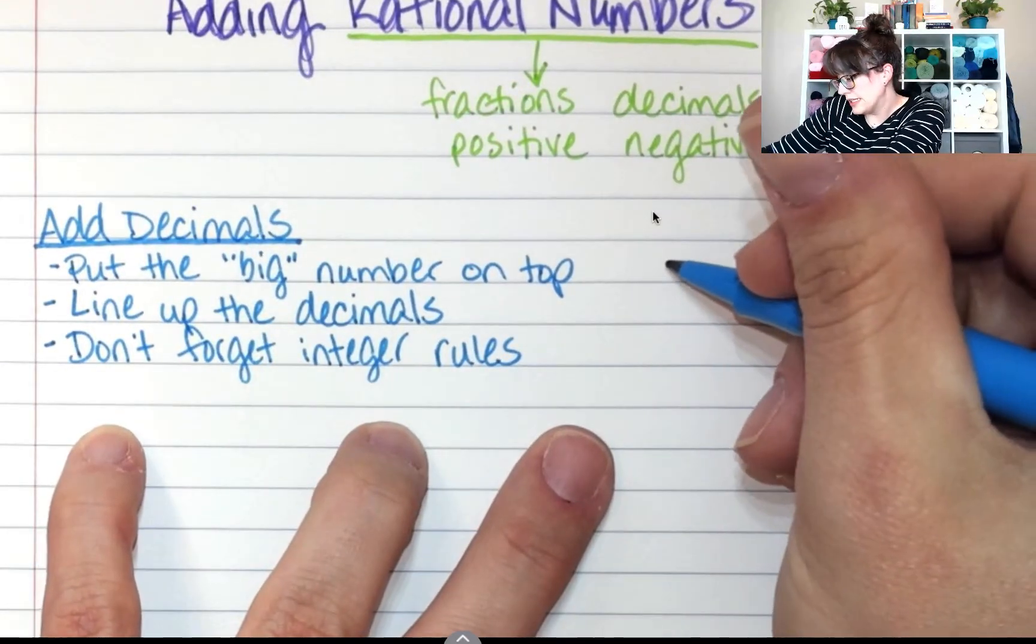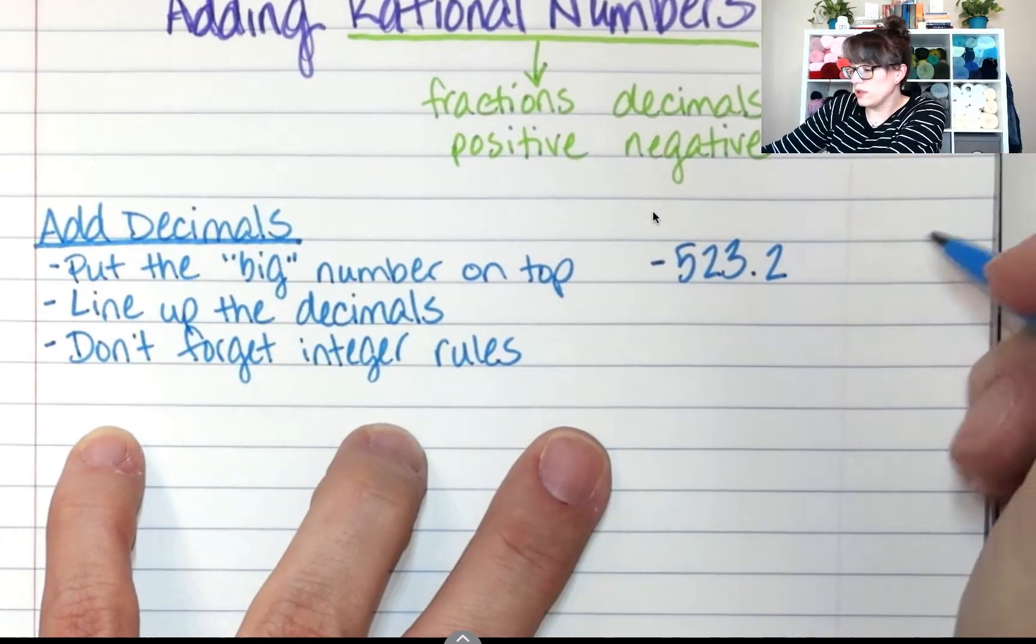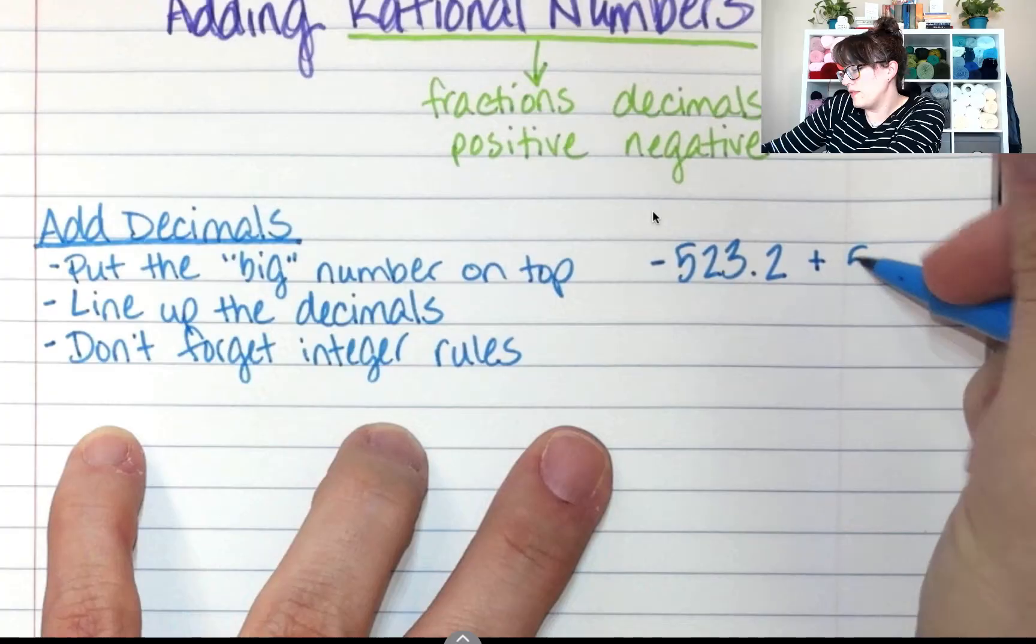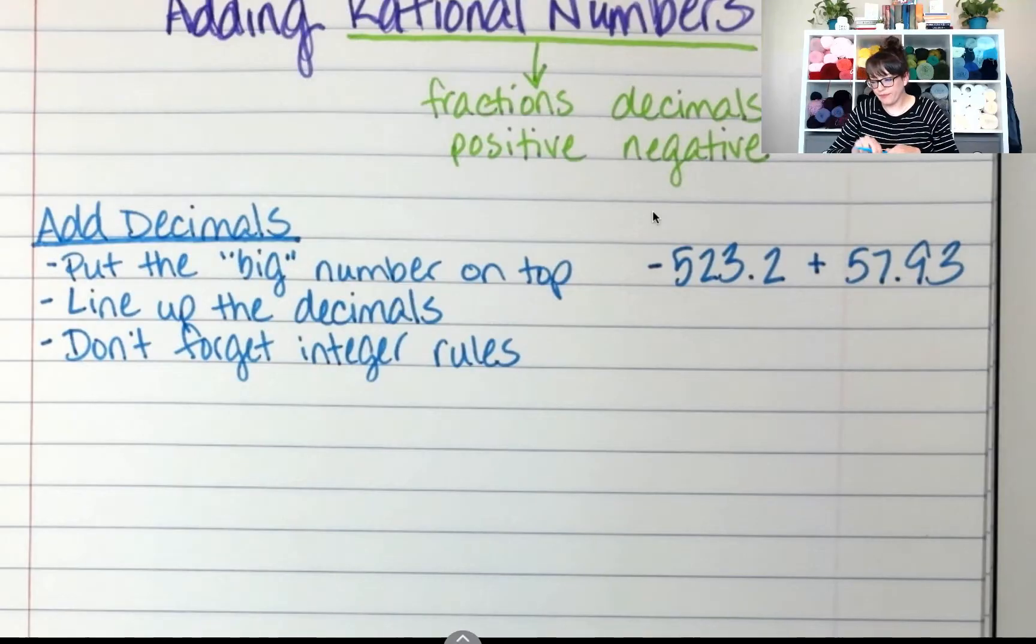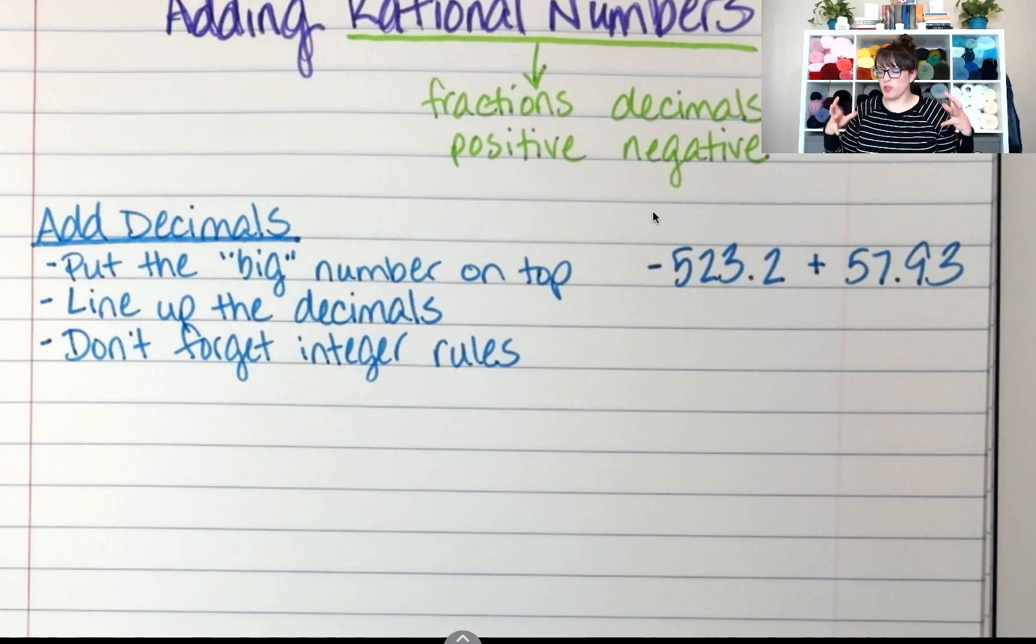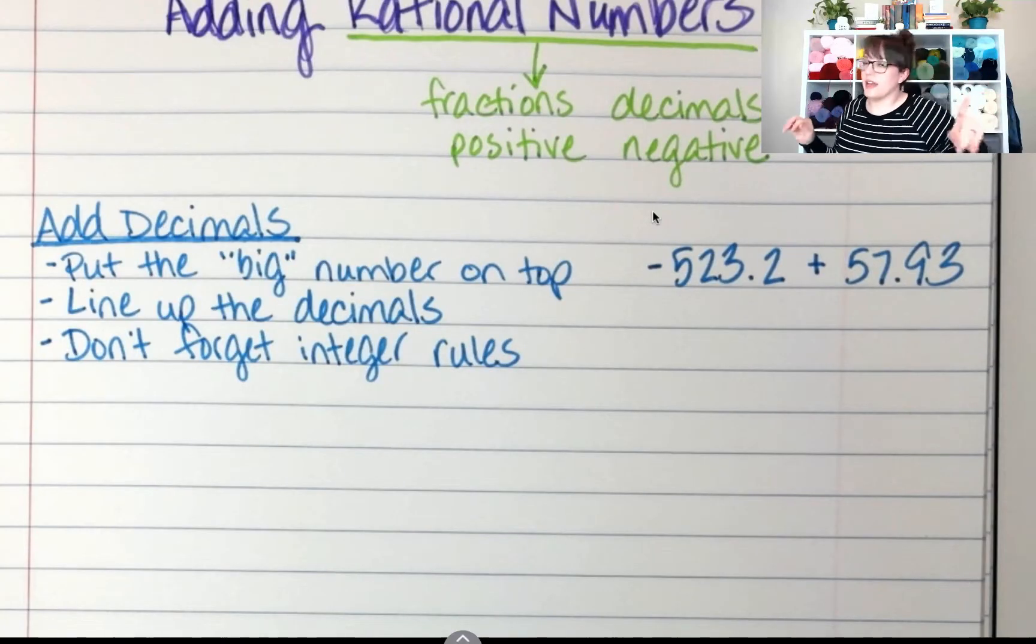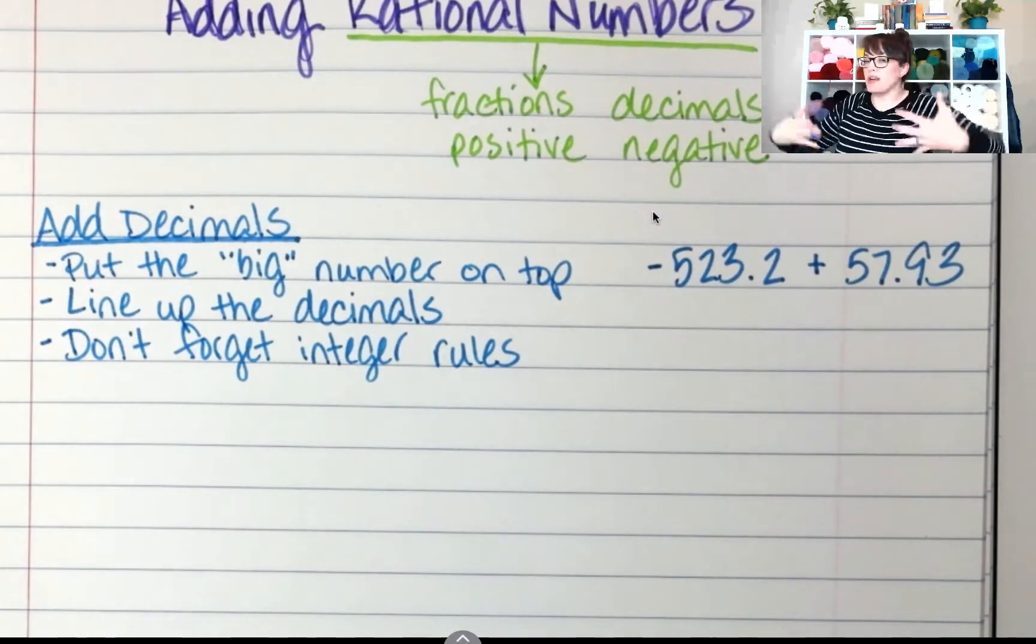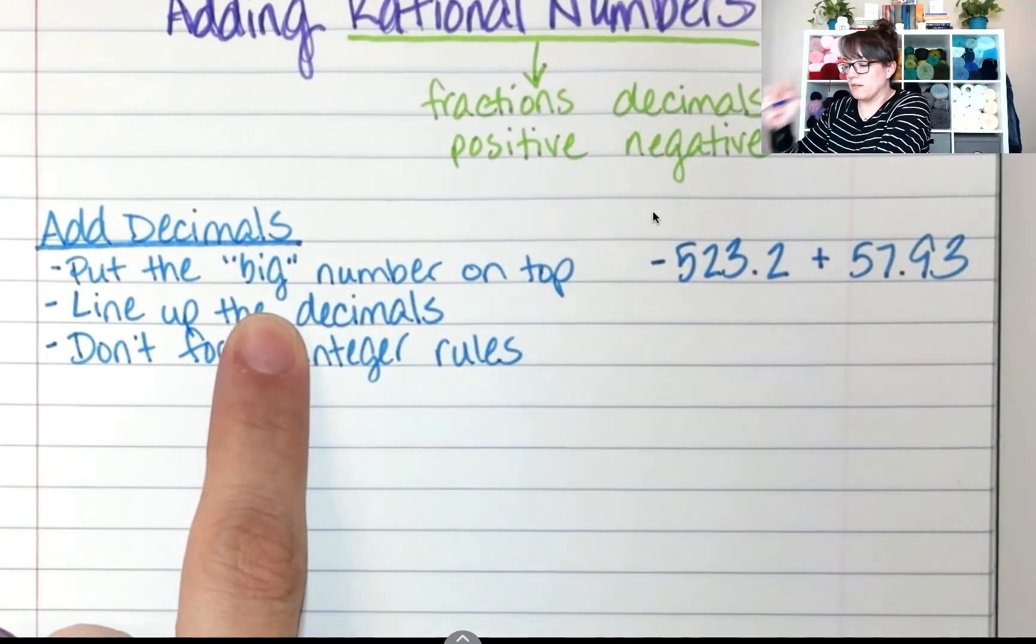If I have negative 523.2 plus 57.93. I don't know. I just made it up. First, which one is the bigger number? Which one has the most pieces to it? Negative 523 or 57.93? Which one is bigger? Which one has more people in it? Negative 523 has more negatives than 57. So this one is going to be my big number that I put on top.